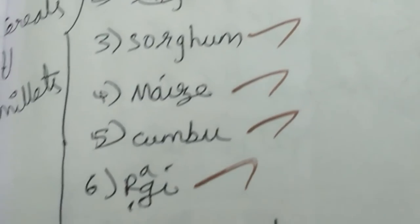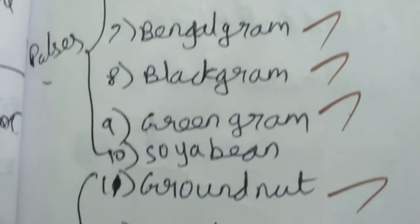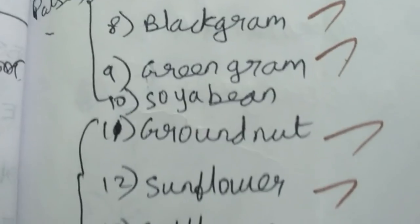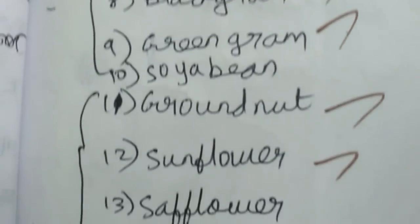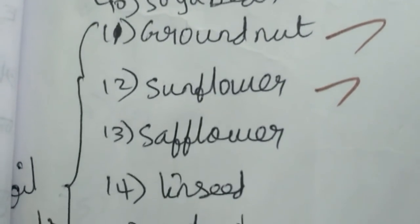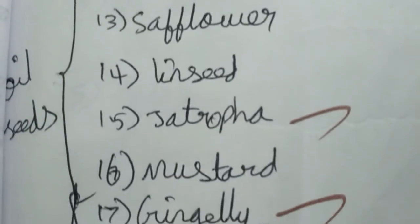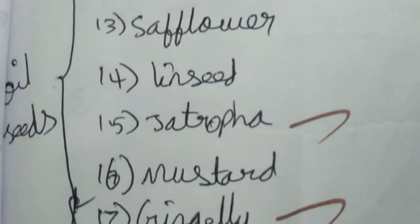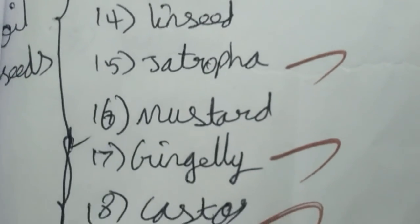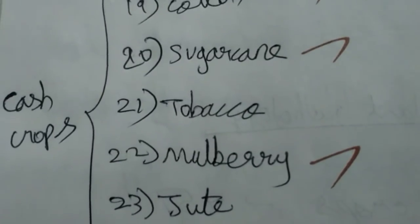We will see diseases of field crops including rice, wheat, sorghum, maize, maize (kombu), ragi, and minor millets. In pulses: red gram, black gram, Bengal gram, green gram, and soybean. In oil seed crops: groundnut, sunflower, safflower, linseed, jatropha, mustard, sesame, and castor.